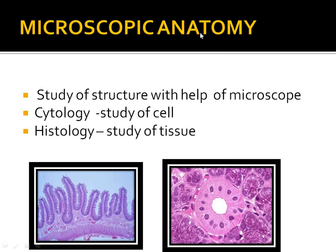Microscopic anatomy means the study of structures with the help of a microscope — the name itself gives the meaning. For example, cytology is the study of cells and histology is the study of tissue. We study the structure of cells and tissues with the help of a microscope — that is microscopic anatomy.